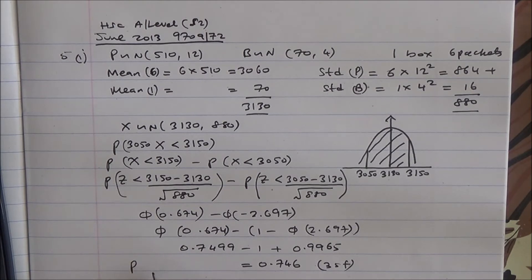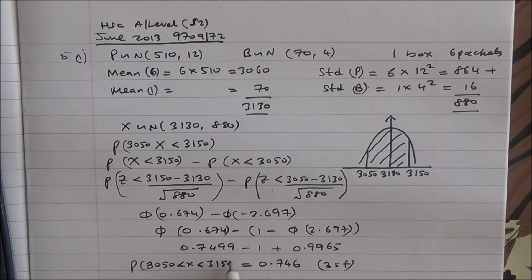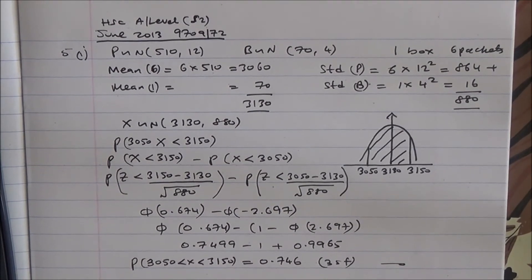So the probability of a box of six packets having a total mass with 3050 less than X less than 3150 is 0.746. That completes the first part of the question.